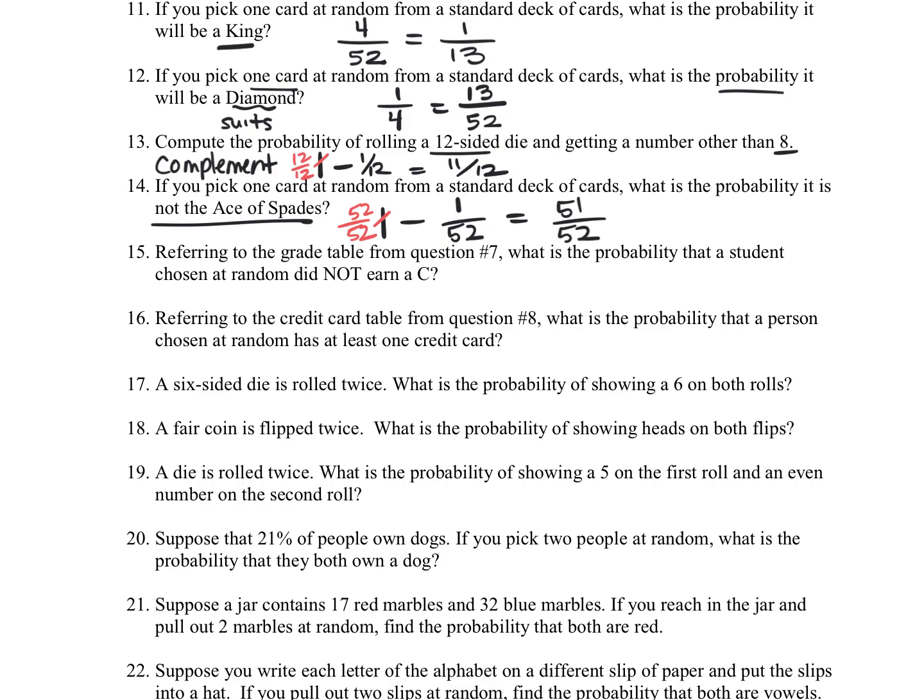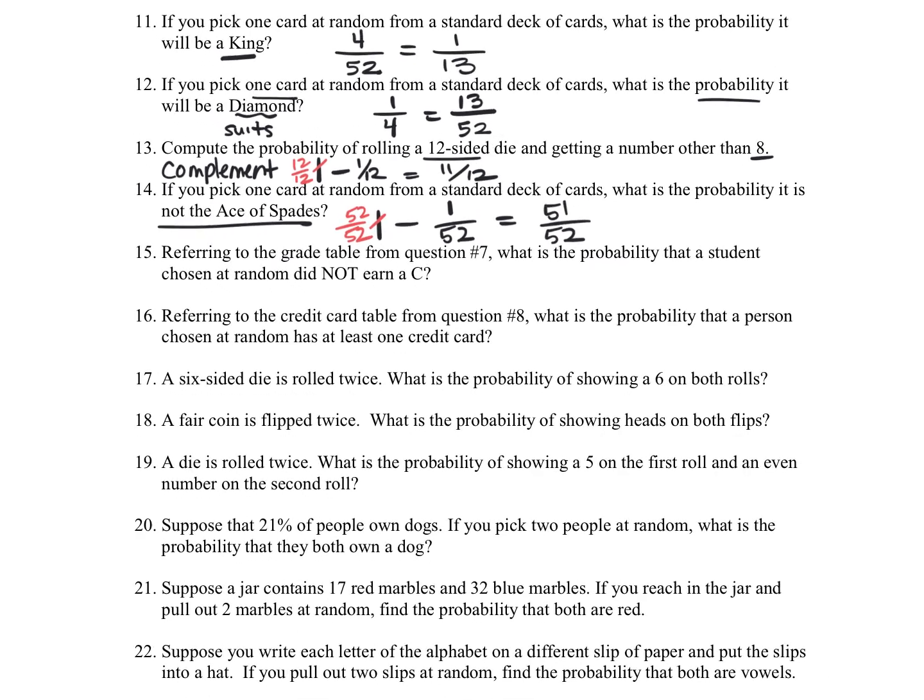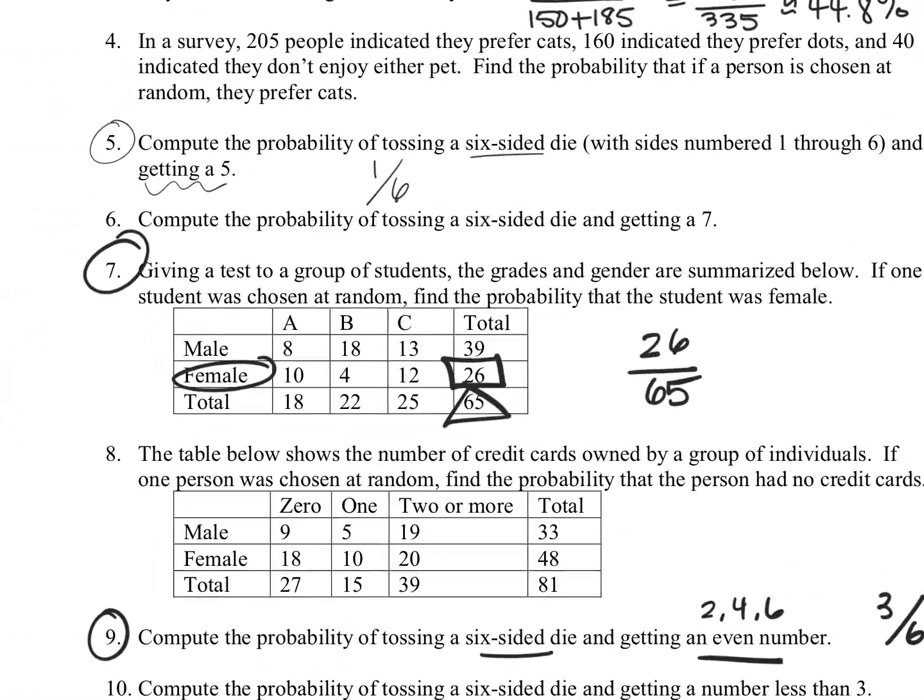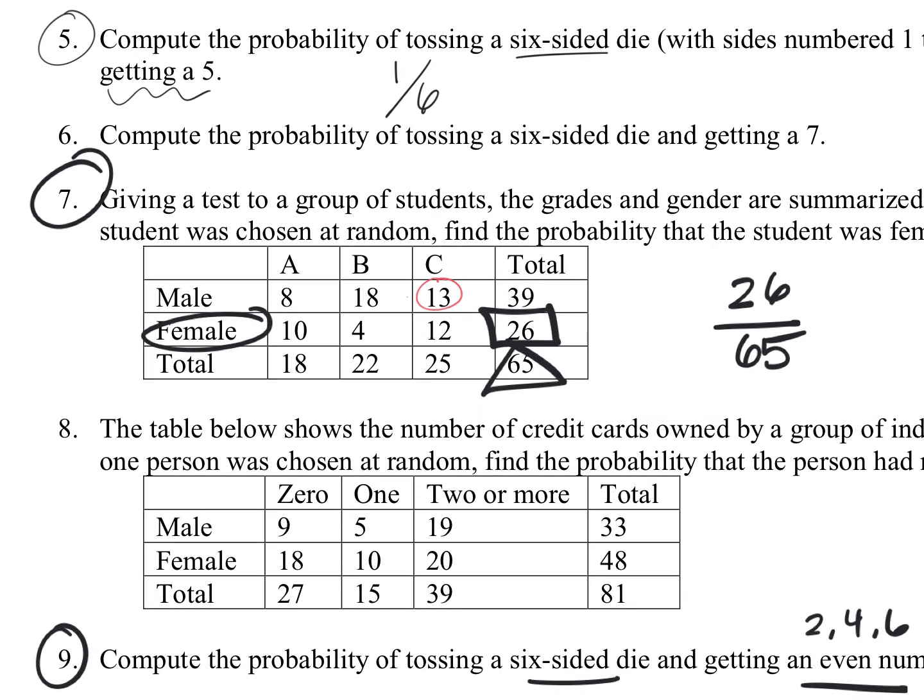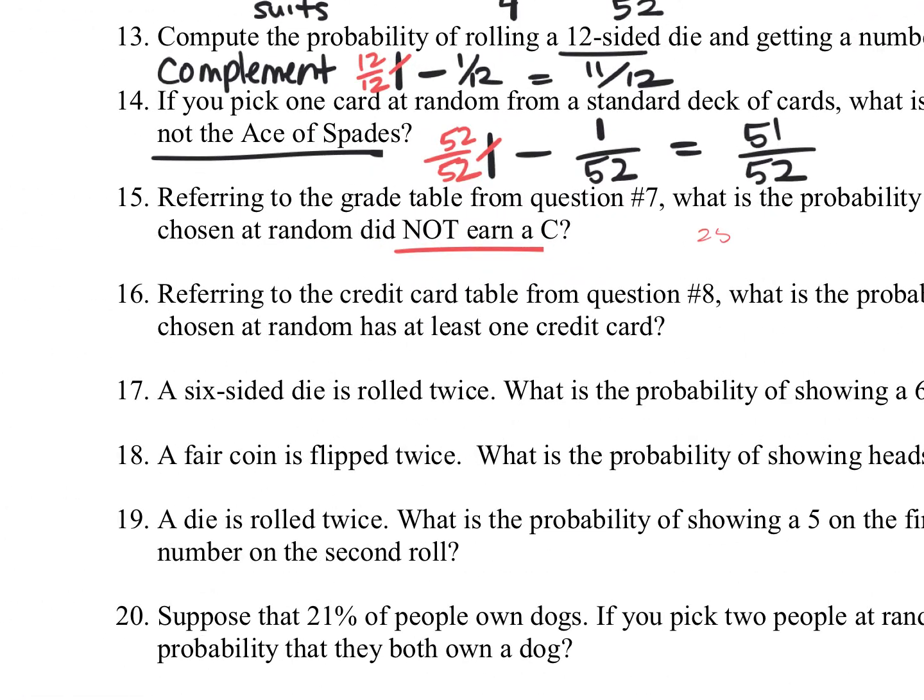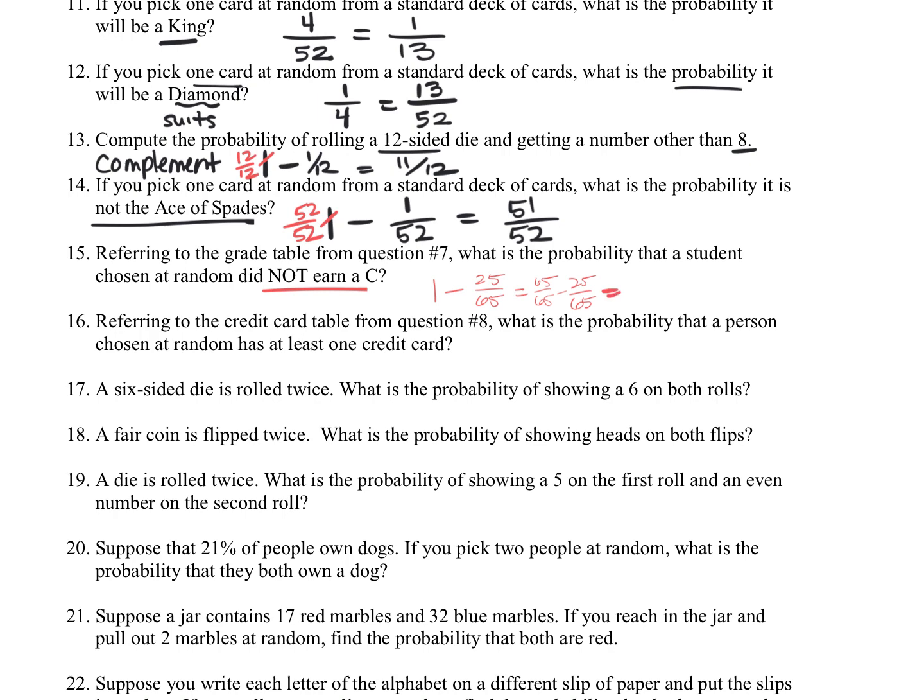For question 15, referring to the grade table for number 7, what is the probability that a student did not earn a C? So let's look at the students that did earn a C. So we're going back to number 7. Again, the students that earned a C, there were 13 that were male, and there were 12 that were female. Here's our total C students is 25, and that was still out of 65. So those that earned a C would be 25 out of 65, but we want to not earn a C, so let's take 1 minus that. And again, that's like 65 over 65 minus the 25 over 65, which is equal to 40 out of 65. If you reduce that more, if you divide it by 5, that would be 8 thirteenths.